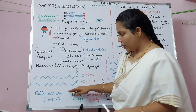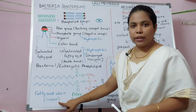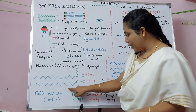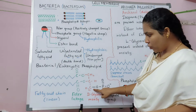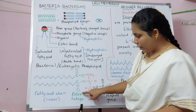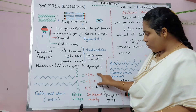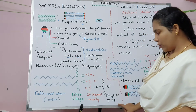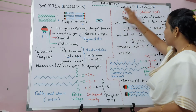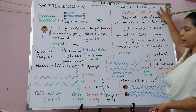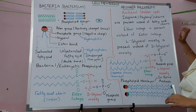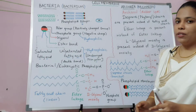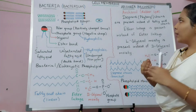A single phospholipid structure can also be drawn as a linear fatty acid chain with no branches, attached to glycerol using an ester bond, and this glycerol is in turn connected to a phosphate group.